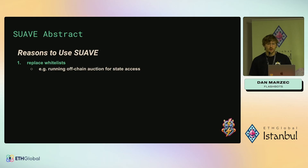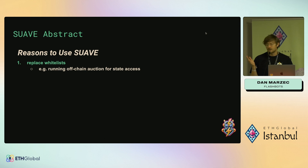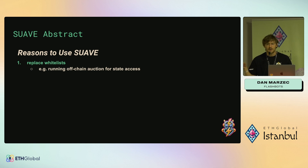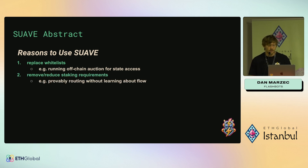Reasons to use Suave. Right now there are a lot of applications that utilize whitelists, like running off-chain auctions for state accesses. This really isn't the DeFi ideal in many cases — these lists held on private servers where you may or may not have access. So we're hoping Suave can help fix that.